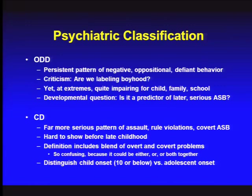The debate is: are we labeling boyhood behavior, or are we showing early identification of antisocial patterns we'd be glad we caught at age five rather than waiting until age 10 or 15? Conduct disorder is much more severe, with many symptoms — some overt aggression, some covert, some on the legal side like running away and truancy. It's a heterogeneous category. Many kids with ODD graduate a few years later into conduct disorder — now physically or sexually assaulting others, or committing robbery.